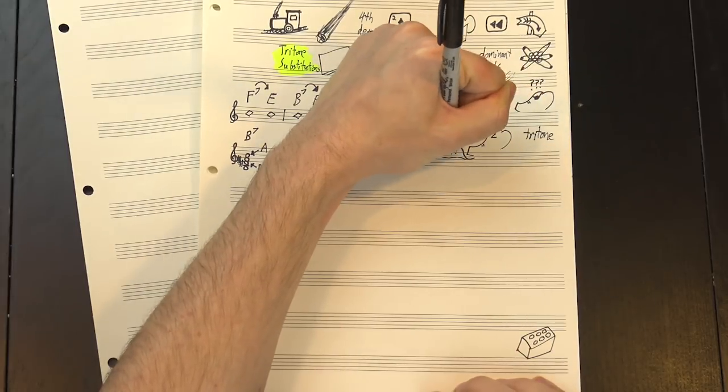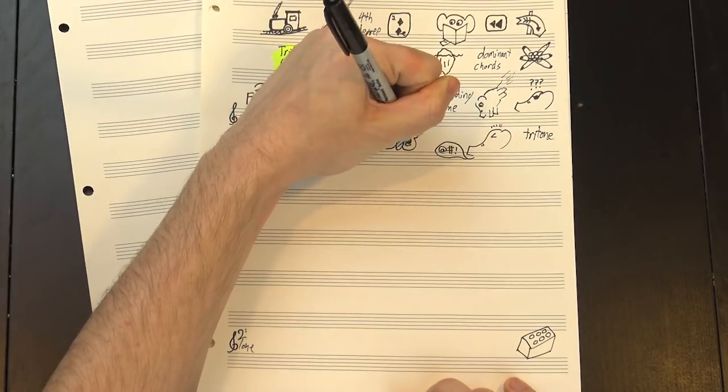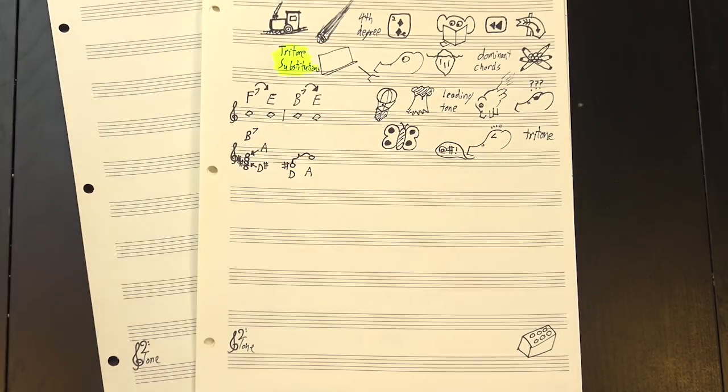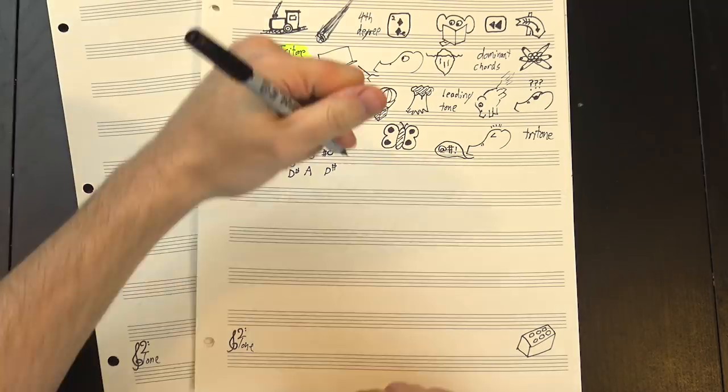The tritone is a really dissonant interval, but for our purposes here, what's more important is that it's symmetrical. Going from D-sharp up to A is a tritone, but going from A up to the next D-sharp is also a tritone.